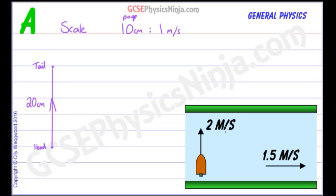And so when we now add this vector of the river flowing, we need to add it so that its head lines up with the tail of the other vector. So this is now going to start here and we're going to measure across and it's going to have a length of 15 centimeters. So let's do that now.